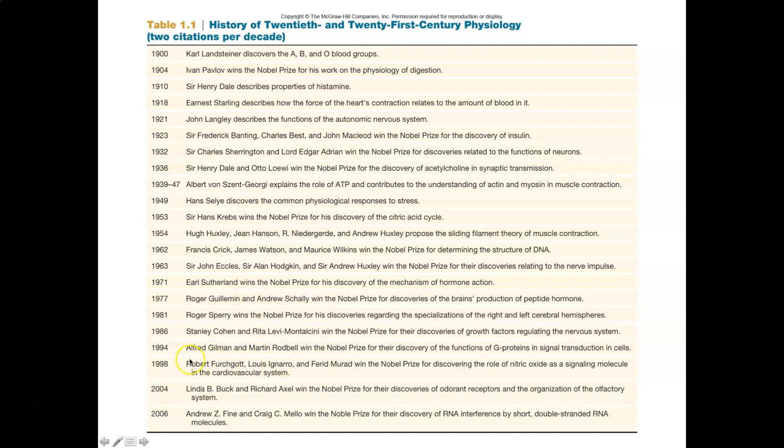If you get into some of these last Nobel Prize winners, you'll notice that in 2004, it was for the olfactory system and how our olfactory receptors work. In 2006, RNA interference. So you're getting into very specific functionality, how G proteins work and how chemical signaling works within the body. And these are all topics that we'll get into as we look deeper into physiology.